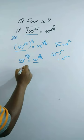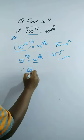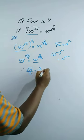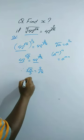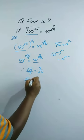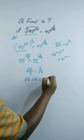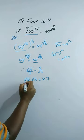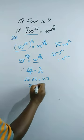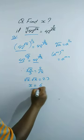Since the bases are equal, therefore square root x by 3 is equal to 2 by square root x. On cross multiplying, we get square root x times square root x equal to 2 times 3. Since square root x times square root x equals x, we get x equal to 6. This is our solution.